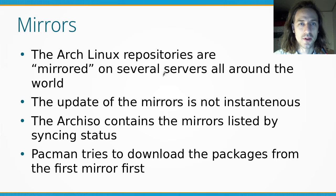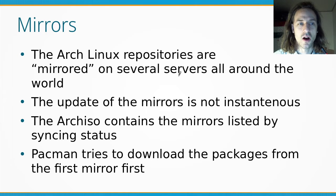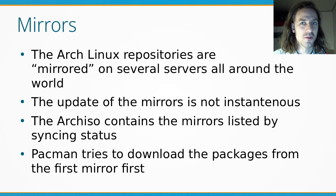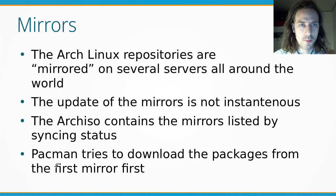The Arch Linux ISO live medium contains the mirrors listed by syncing status, so the mirrors at the top of the file are the ones that were synced better — with a higher percentage of newer packages synced — at the instant when the ISO was created. This information might be out of date already, and pacman will always try to download from the server listed at the top, only resorting to other servers one by one if that fails.